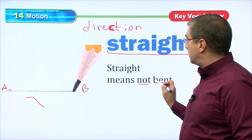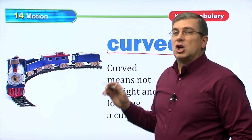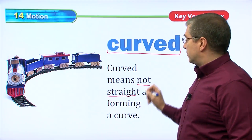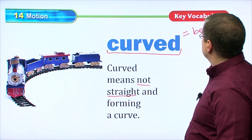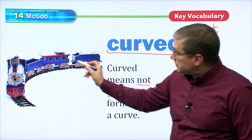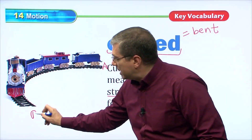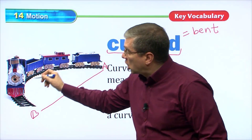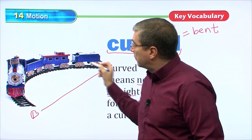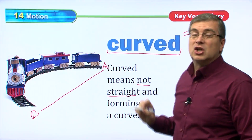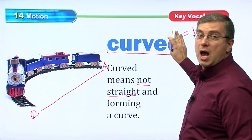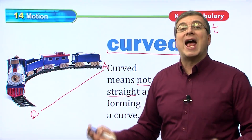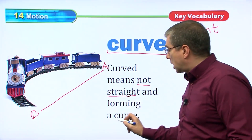Now, straight is not bent. Curved means not straight — so curved means bent. Here is point A and here is point B. A straight line would go directly, but this is not a straight line — it's a curve. It's curving around; it's bent. The train tracks are bent, forming a curve. 'Curve' without a D is a noun — you go around the curve. 'Curved' with a D is an adjective — the tracks are curved.